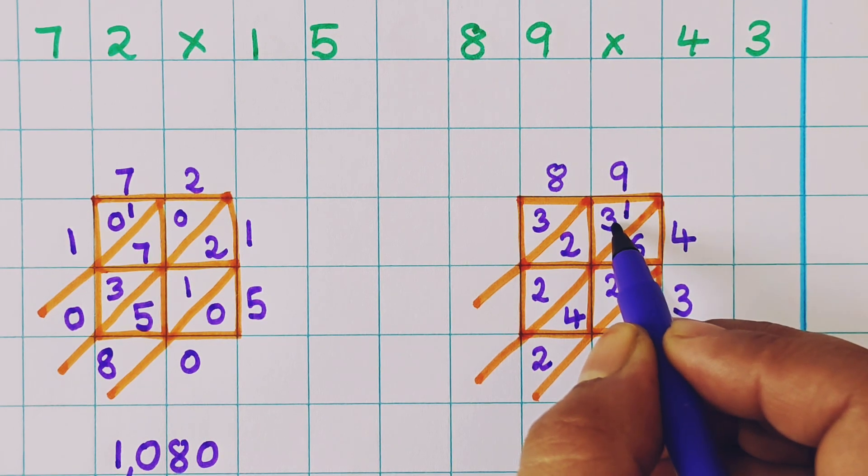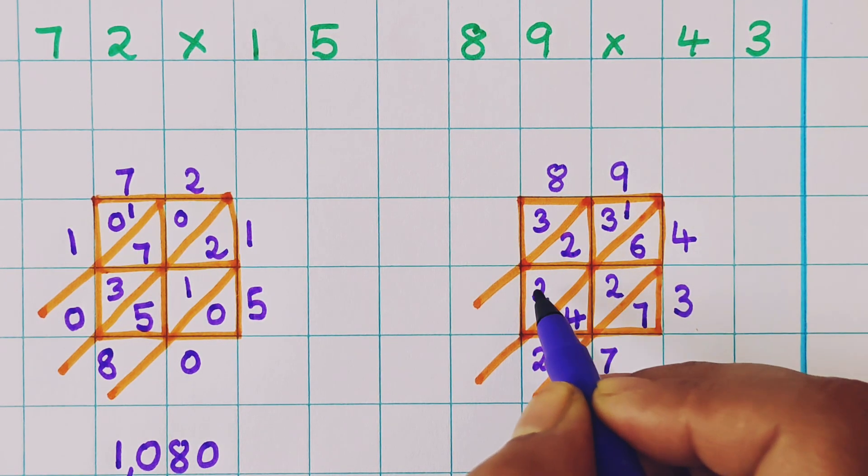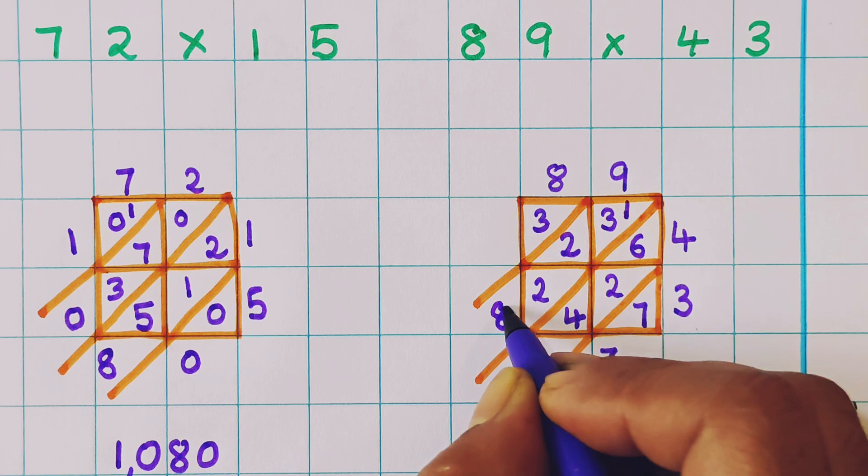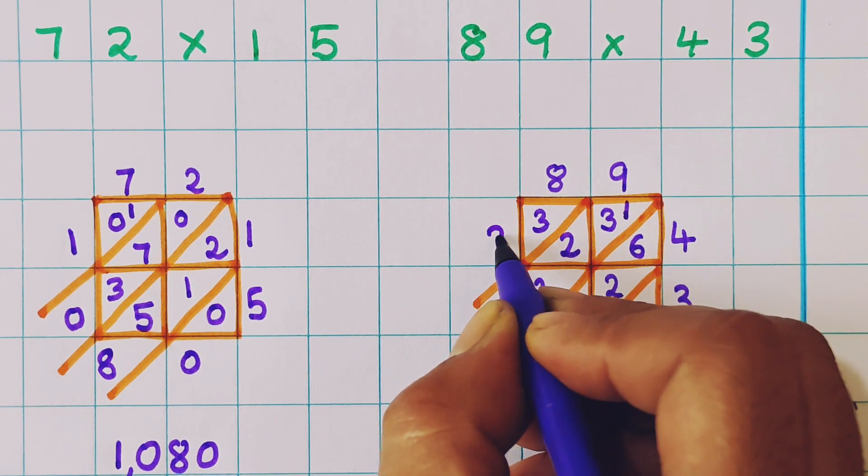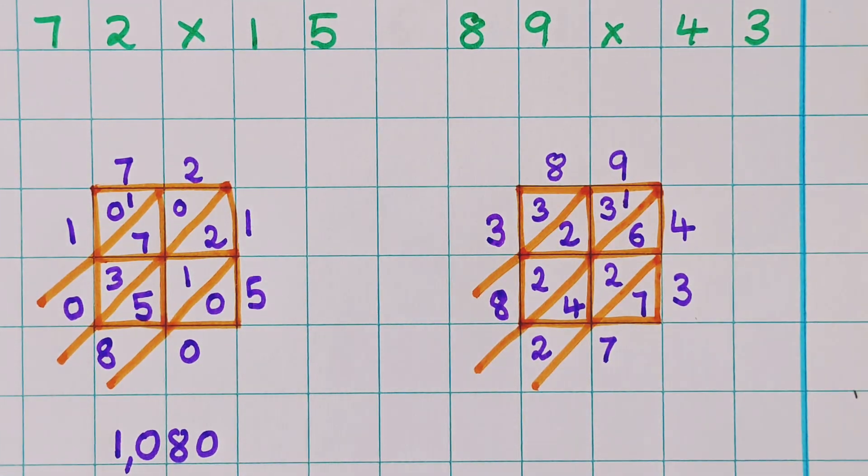Now 1 plus 3, 4. 4 plus 2, 6. 6 plus 2, 8. Now 3 plus nothing, 3. So now what is the answer?